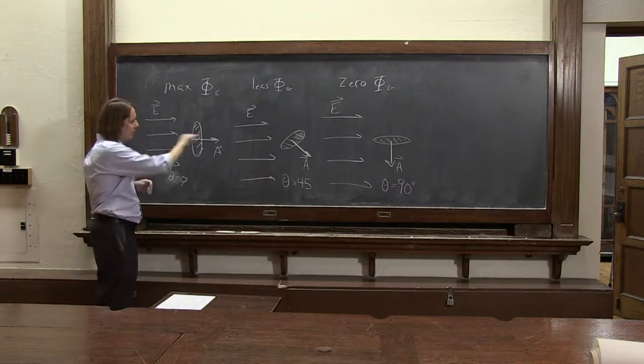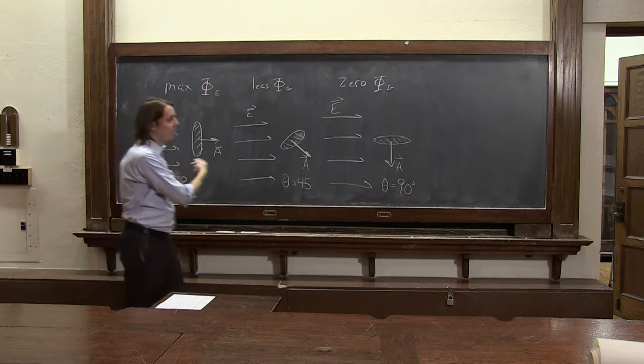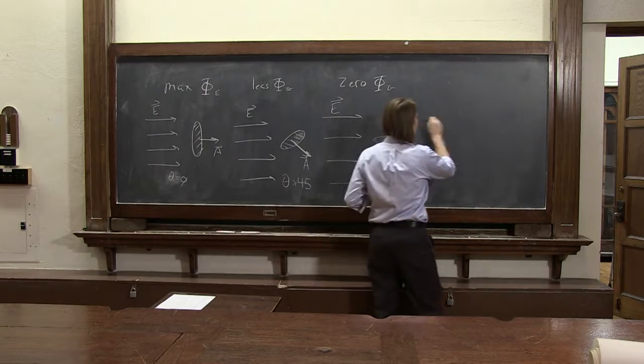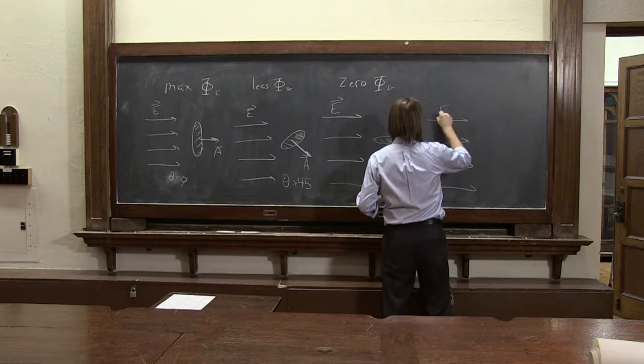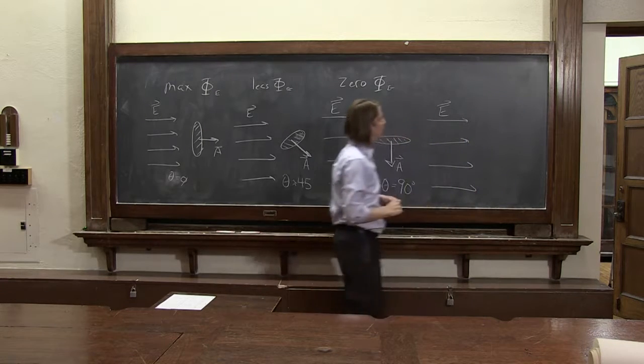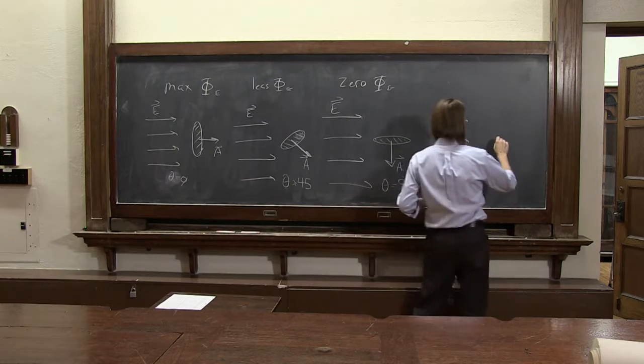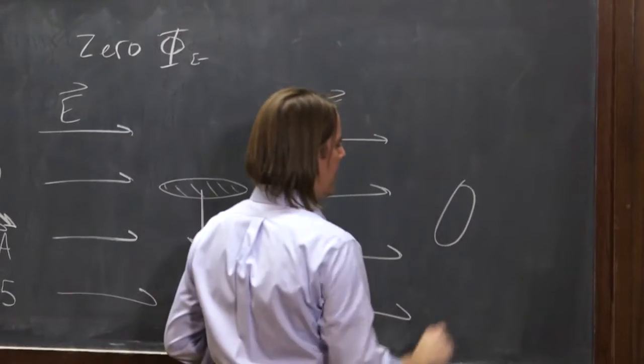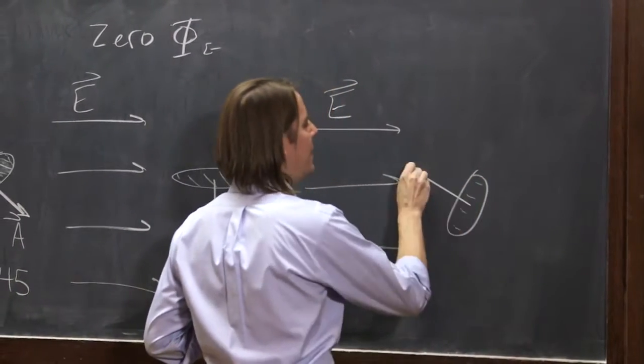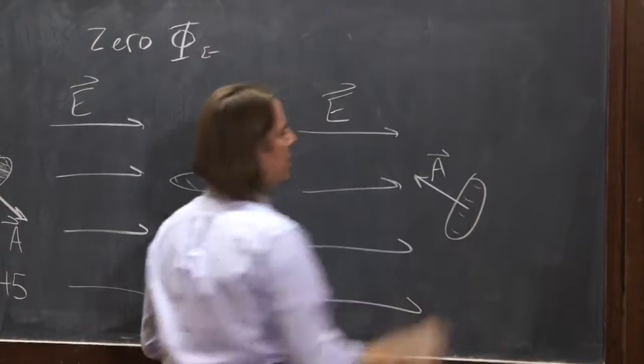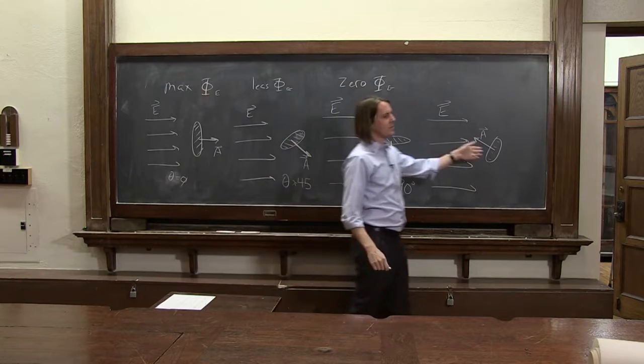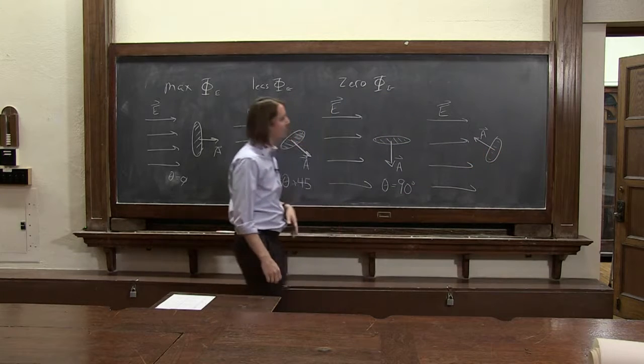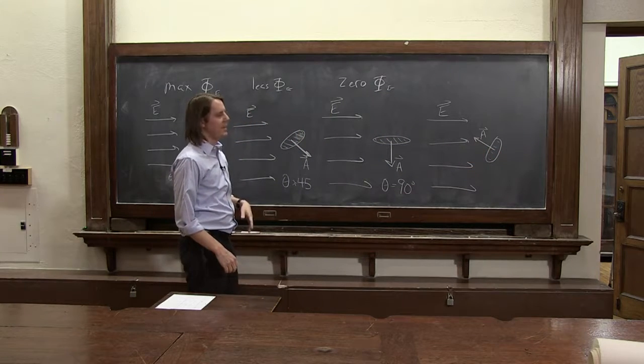I keep putting A over here. Why couldn't A be back here? Well, it can actually. It's actually arbitrary in this case which way A goes. I could draw this surface like this and I could say, no, A is that way. There is nothing special about this side or this side. They're both valid sides. They're both valid ways to make A go.